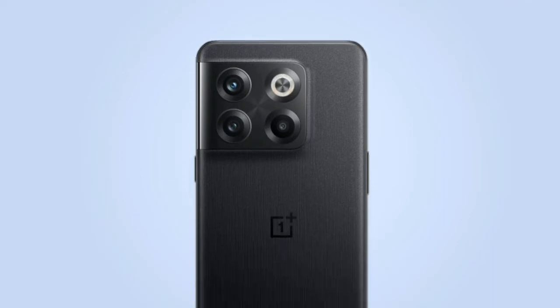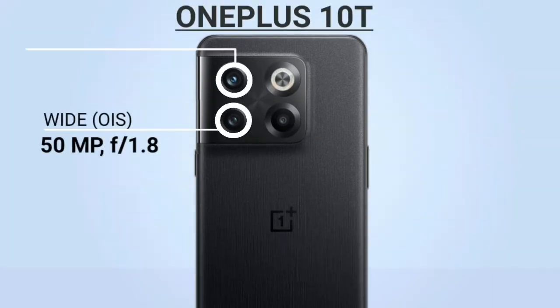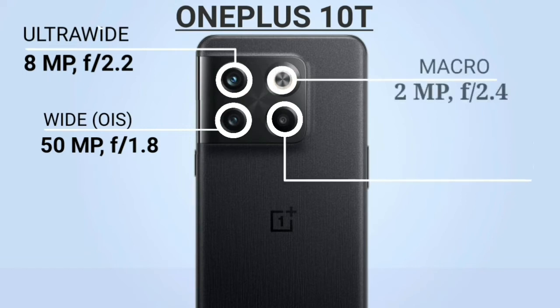Let's discuss OnePlus 10T. Its primary camera has 50 megapixel aperture 1.8, ultrawide 8 megapixel aperture 2.2, and macro camera of 2 megapixel aperture 2.4 and LED flash.